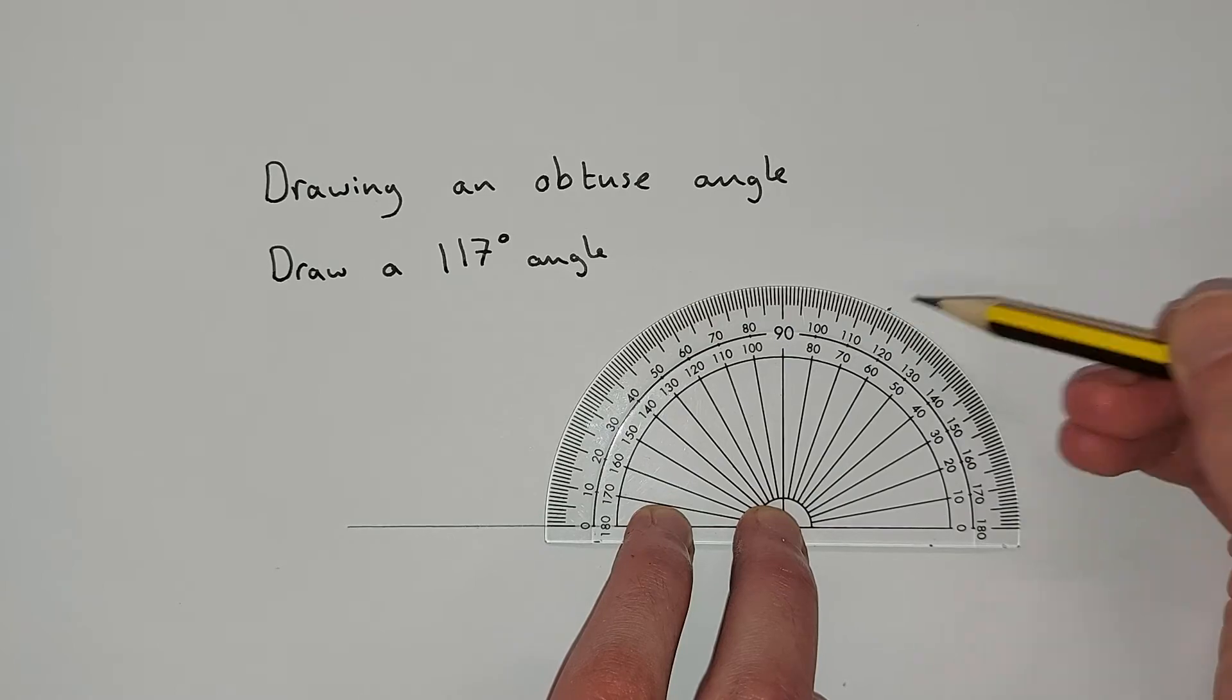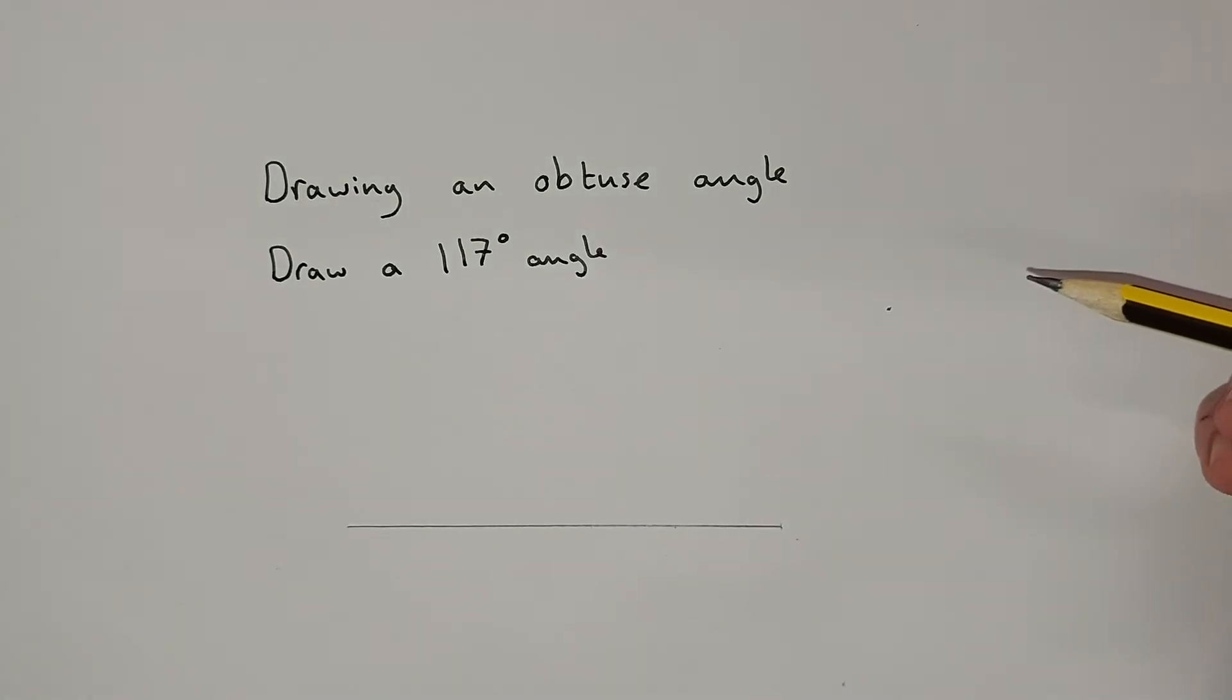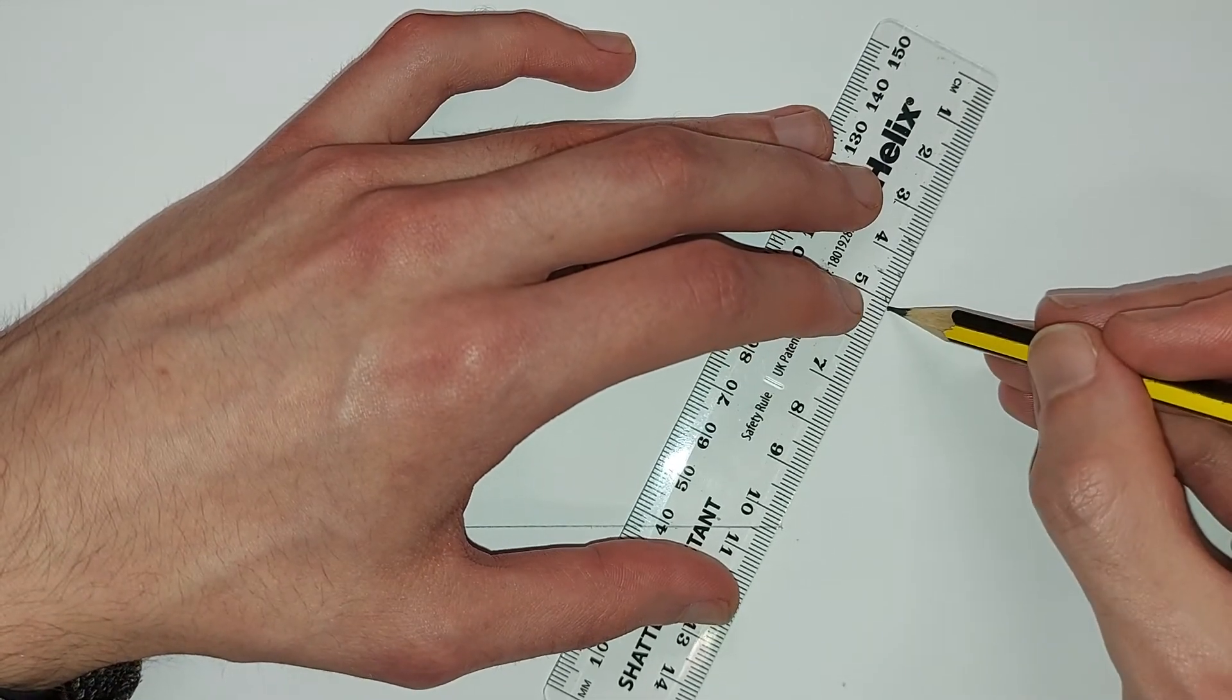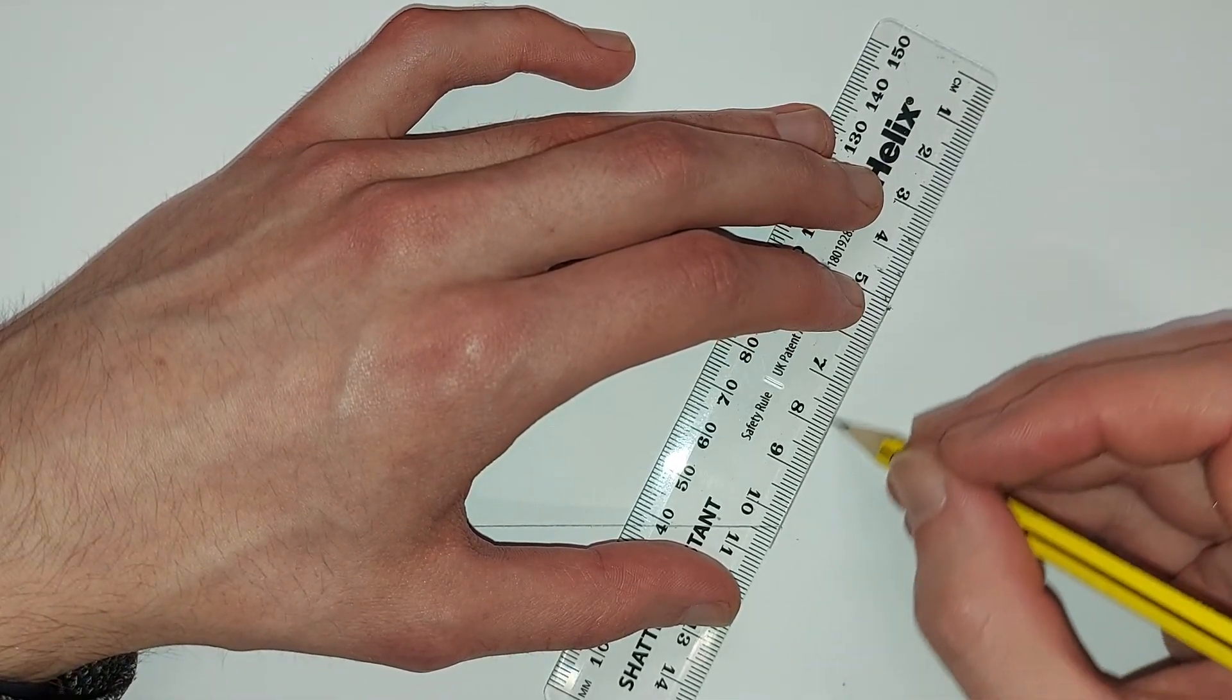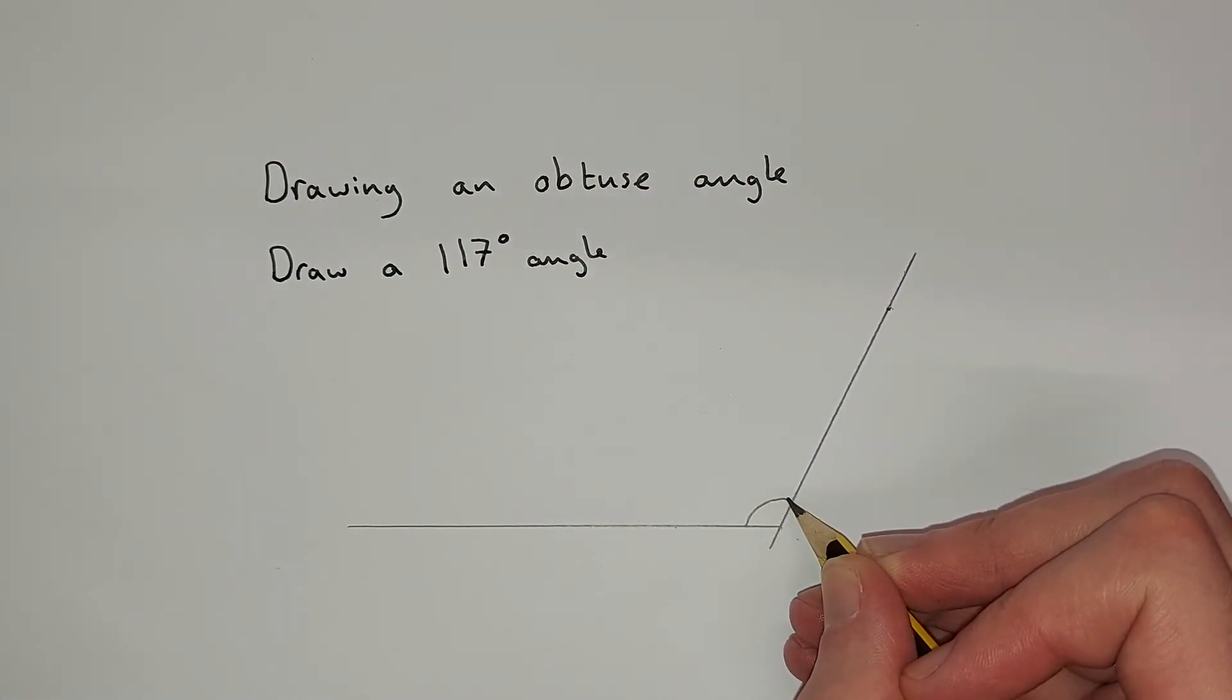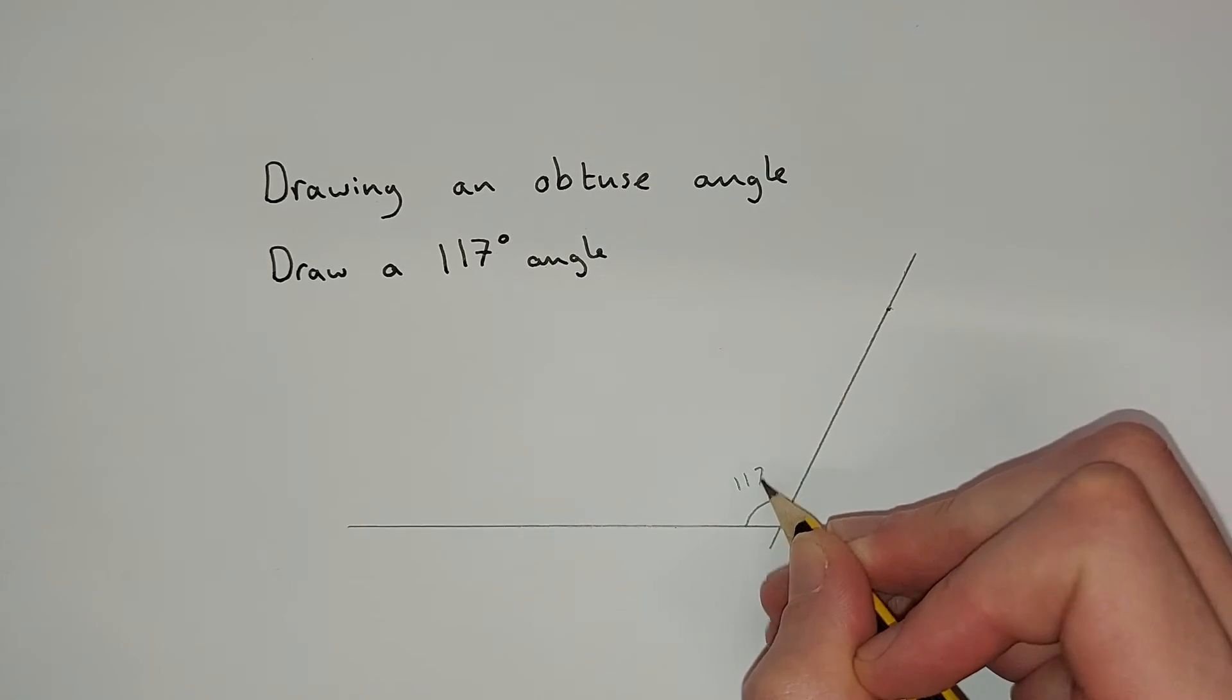Do a little mark, pull your protractor away, get your ruler out, and then we're going to join that up like so. So this angle here should be 117.